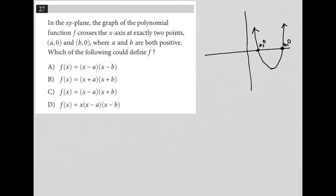So the question says, which of the following could define f? Now I understand what the question's asking. So, first of all, if there's only two x-intercepts, it should be a quadratic,